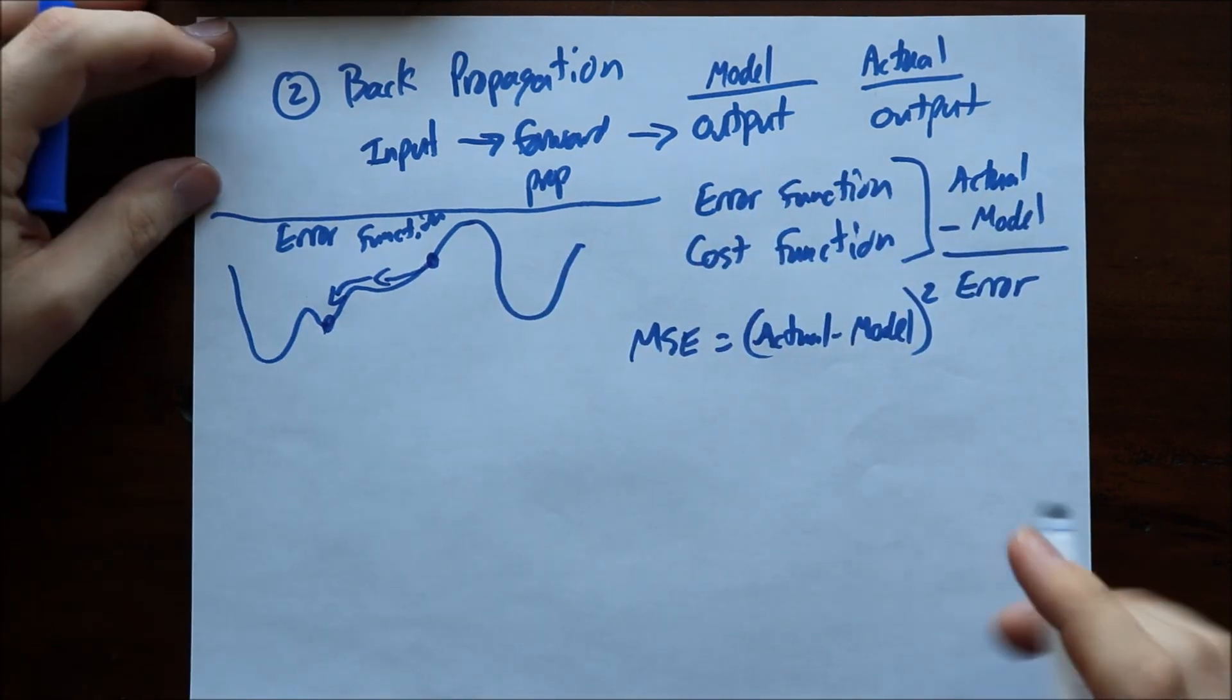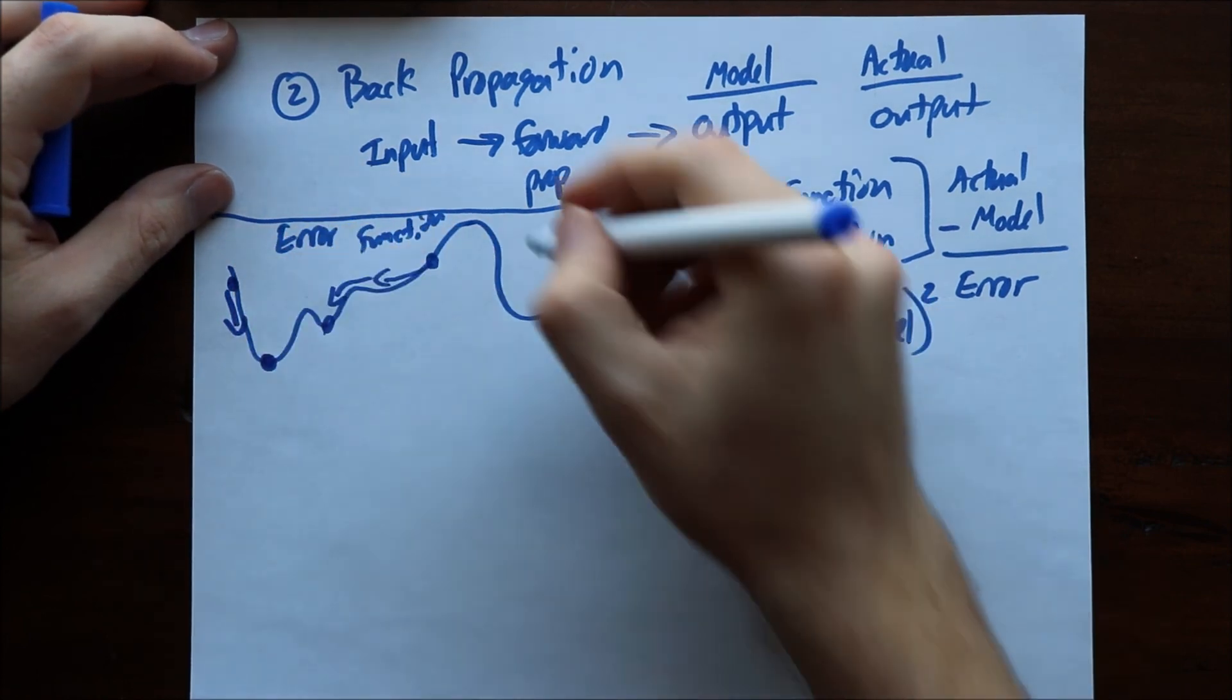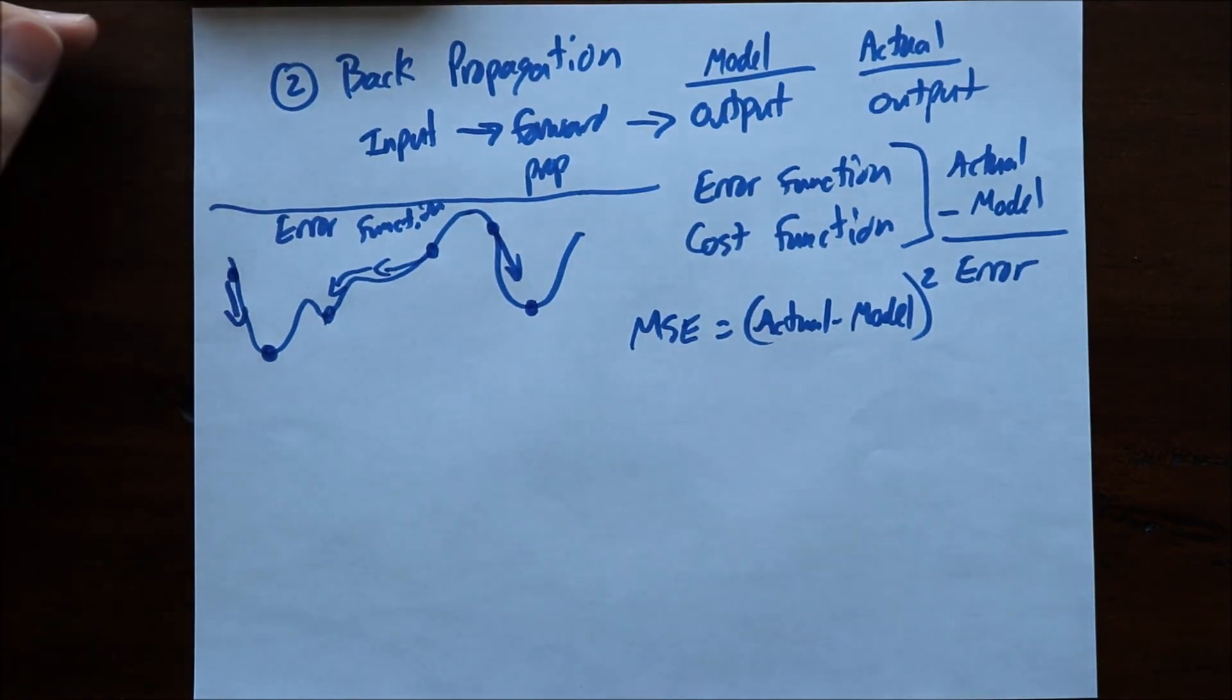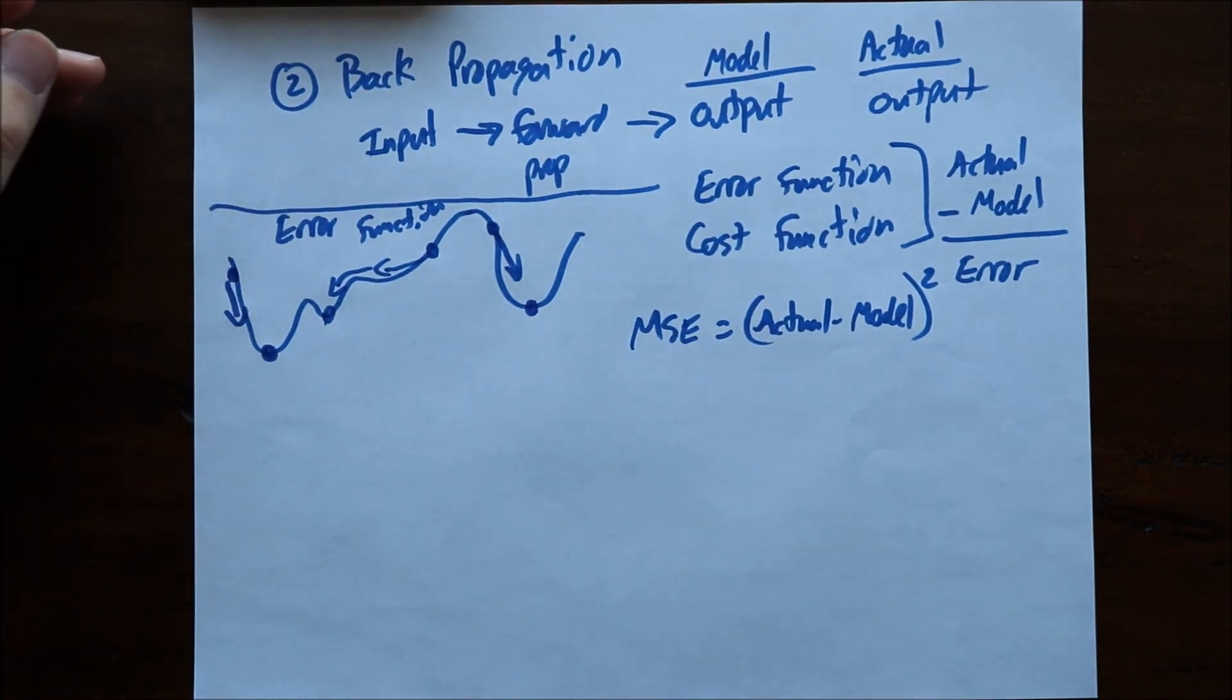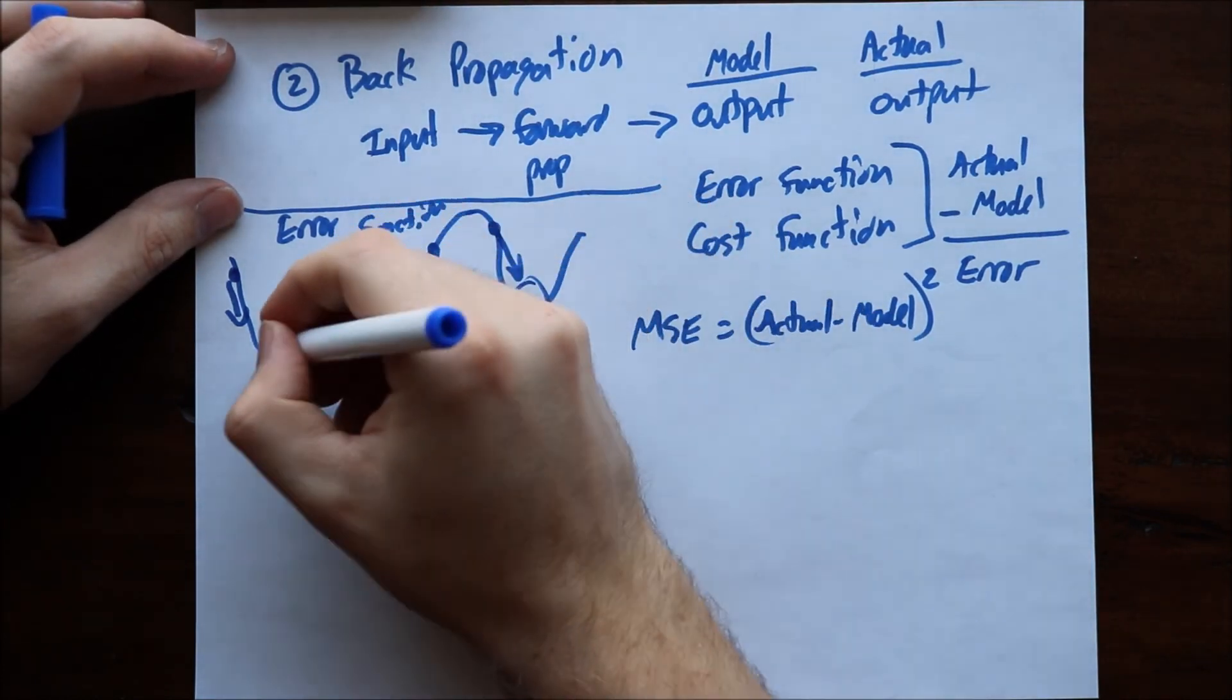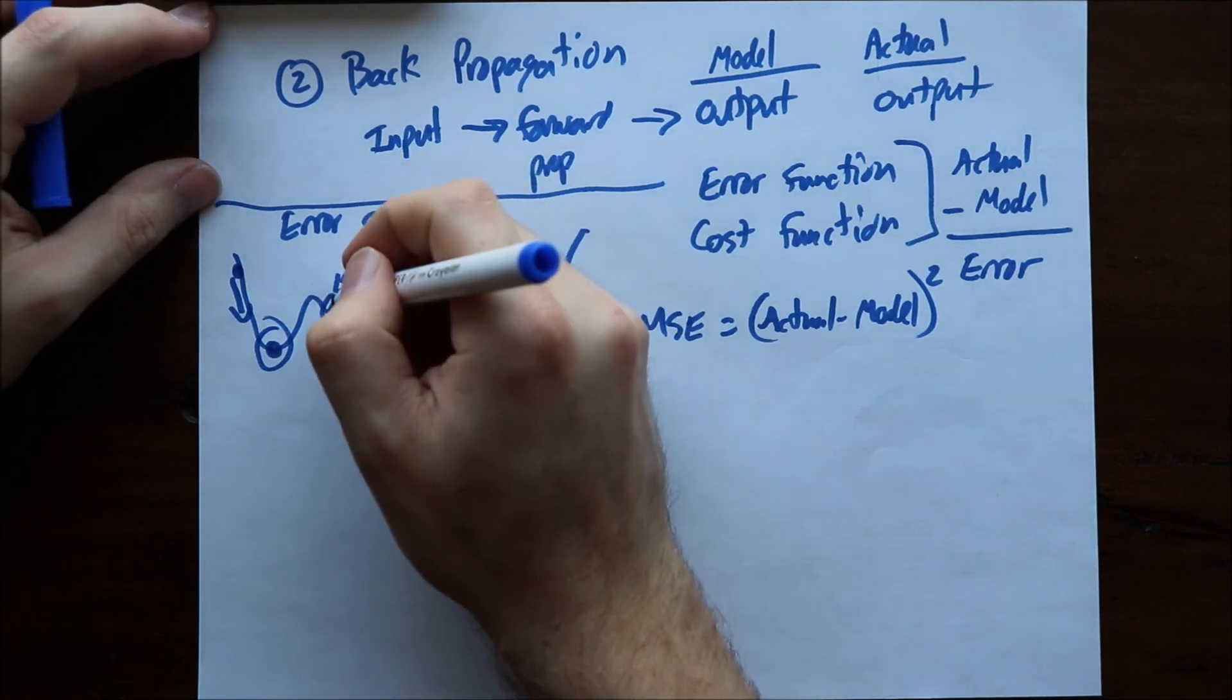Depending where you start your weights you could start here and you might end up coming down and up here as a final one, or you could start here and come down and end up here as a final one. So it's important when you do these is to run multiple models and to generate random numbers for the weights when you start the model because you could end up at different local minimums depending where you started.